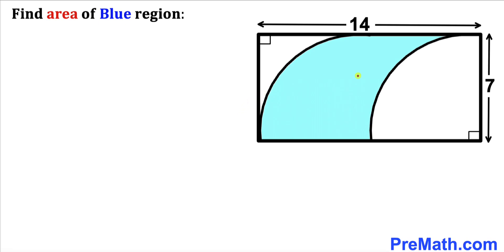Welcome to PreMath. In this video we have got this rectangle as you can see in this diagram such that its dimensions are 7 and 14 units, and moreover this blue circular shape is confined inside this rectangle. Now we have been asked to find the area of this blue shaded region.